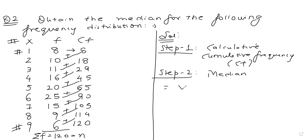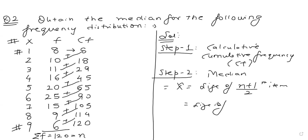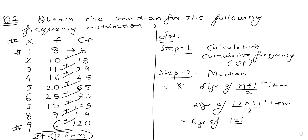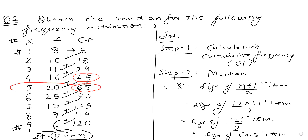Step 2: apply the formula. Median X̃ equals the size of the (N+1)/2-th item. N is 120, so this is the size of the 121/2-th item, which is the 60.5th item. Check the cumulative frequency column — where does 60.5 lie? It lies between 45 and 65, so the median is 5.